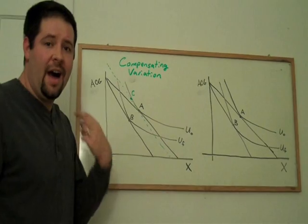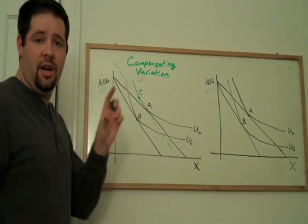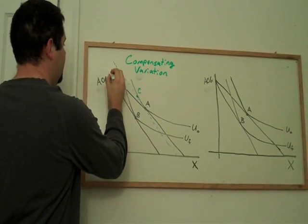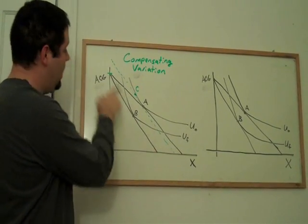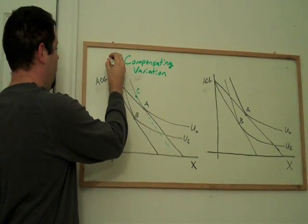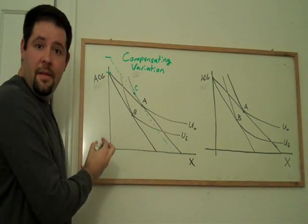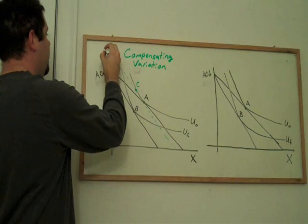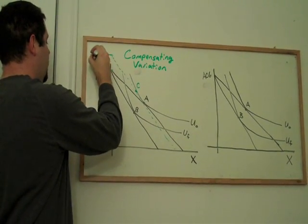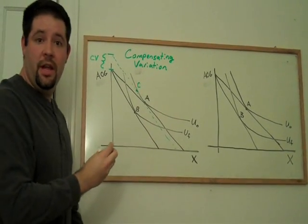And the place where we can find compensating variation on this graph is in the difference between the income on this budget constraint and the compensated budget constraint. And so this would be our compensating variation.